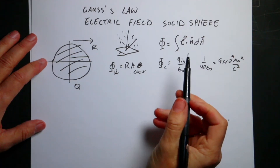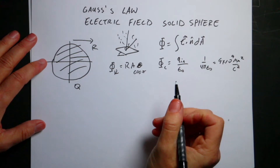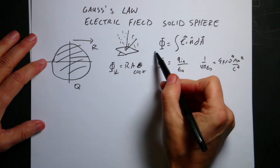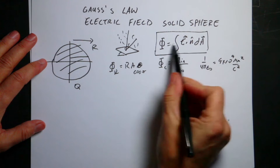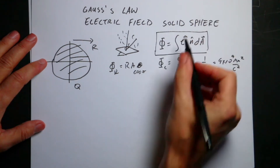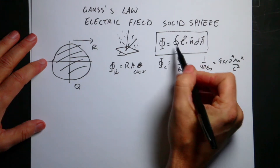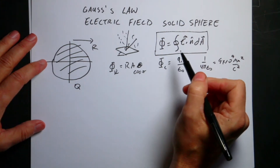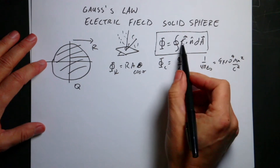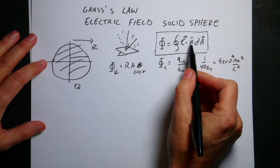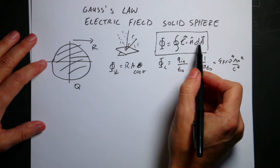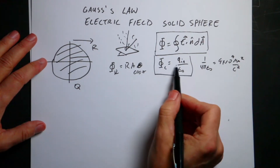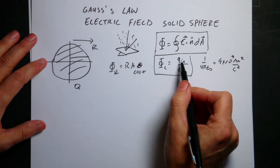It turns out that if I pick a closed surface — any imaginary closed surface — and I calculate the total electric flux through that surface, that's this closed surface integral. This circle on the integral sign means a closed surface area integral, so we're integrating over a complete surface like a sphere or a cube, but not just a flat sheet. If I take E dot n-hat dA, where n-hat is a unit vector perpendicular to the area and dA is each piece of area, I get the total flux. And Gauss's Law says: the total flux for any surface equals the total charge inside divided by epsilon naught.